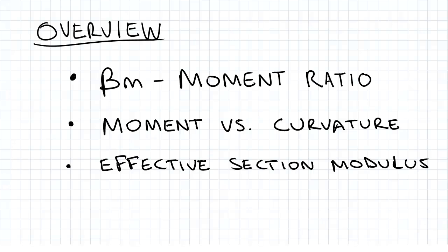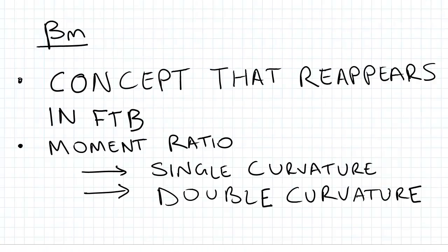Hi guys, just a brief overview of what we'll be covering today. Firstly, we have beta m, the moment ratio, and then the moment versus curvature graph, followed by the effective section modulus graph.